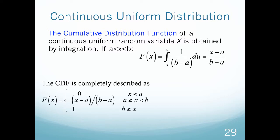The CDF is completely described like this. When x is less than a, or below my range, it's equal to 0. Between my range, it's described by this formula. When it's above my range, x being greater than b, it would be equal to 1. This is similar to what we did before on a non-uniform distribution.